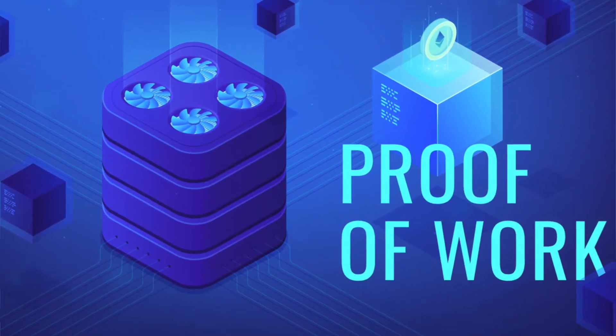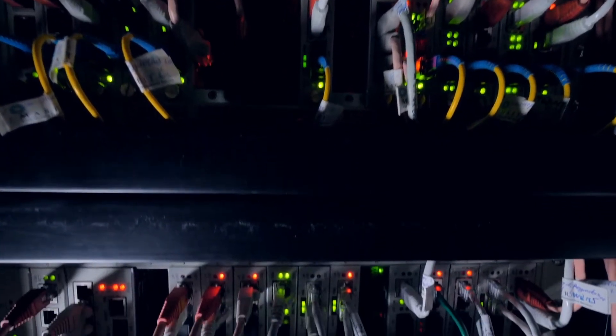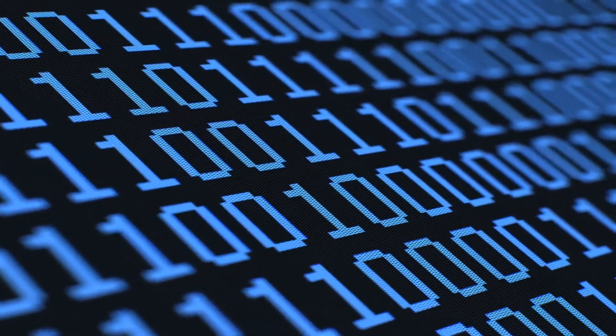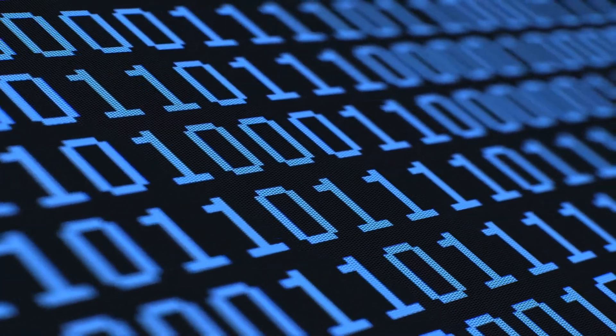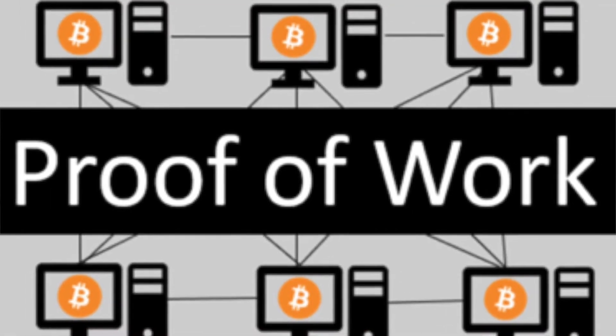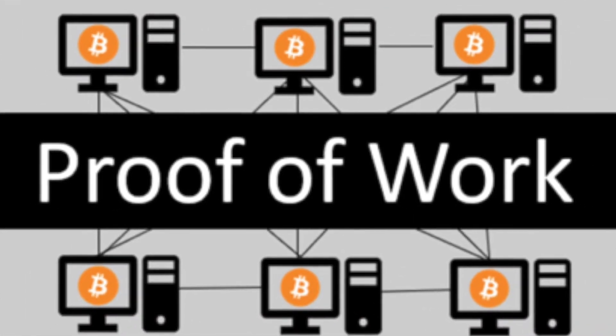To further increase the security of a block, there's also what is known as proof of work. Because there is computing power that exists today to recalculate the hash of a block even after tampering to avoid detection, proof of work exists as a mechanism to slow down the time taken to calculate and add a new block to the chain. If you tamper with one block, you need to recalculate the proof of work for all blocks in the chain.